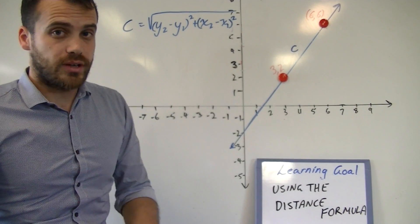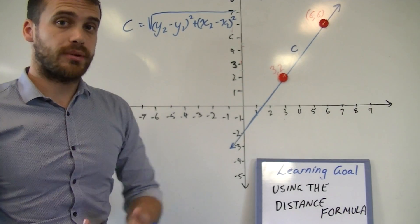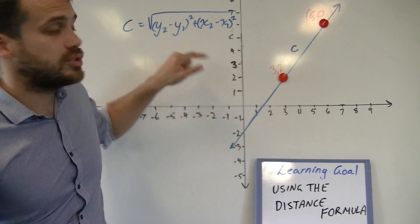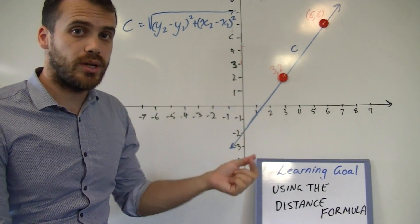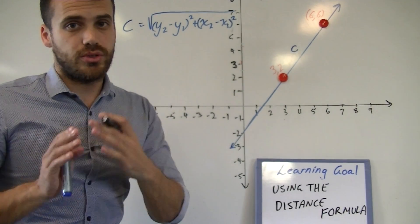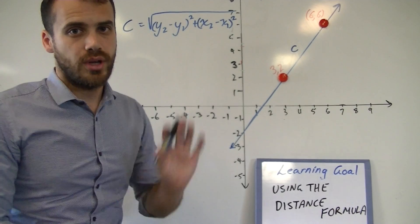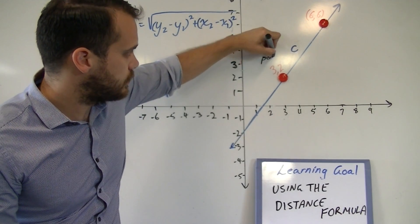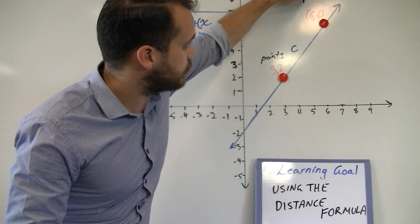Now, it's fairly straightforward. You've given a formula, you plug a bunch of numbers in, and you'll get an answer. First of all, you're going to need to choose which of these points is point one, and which of these points is point two. It doesn't matter, you can choose either one, but I'm going to work from left to right, so I'm going to call this point one, and I'm going to call this point two.